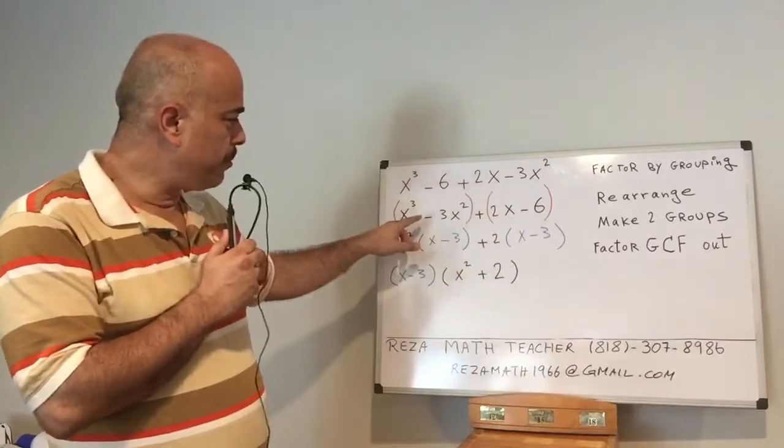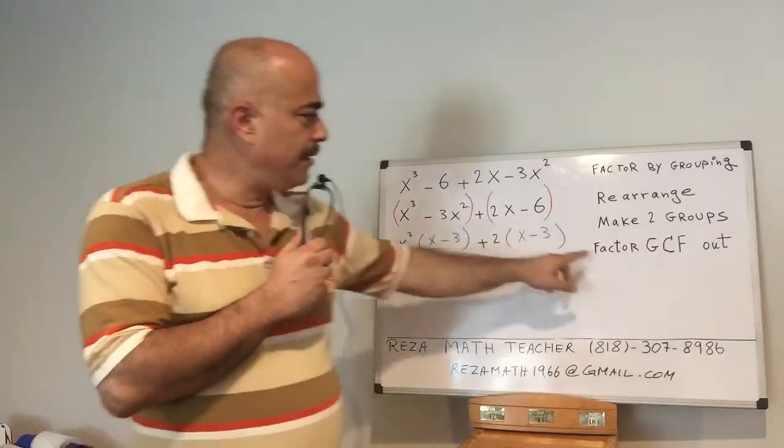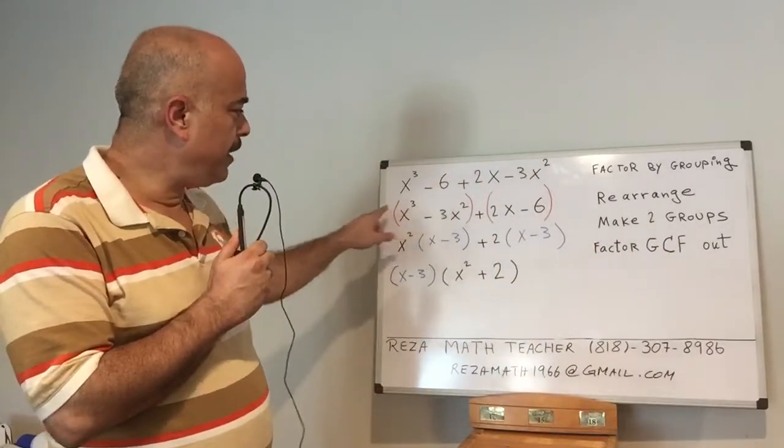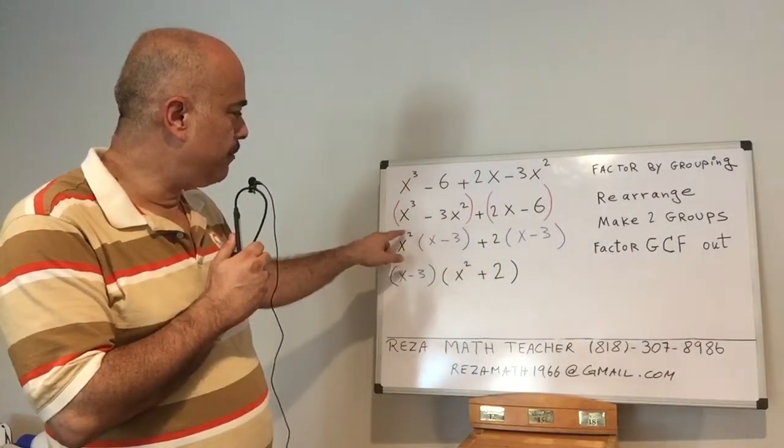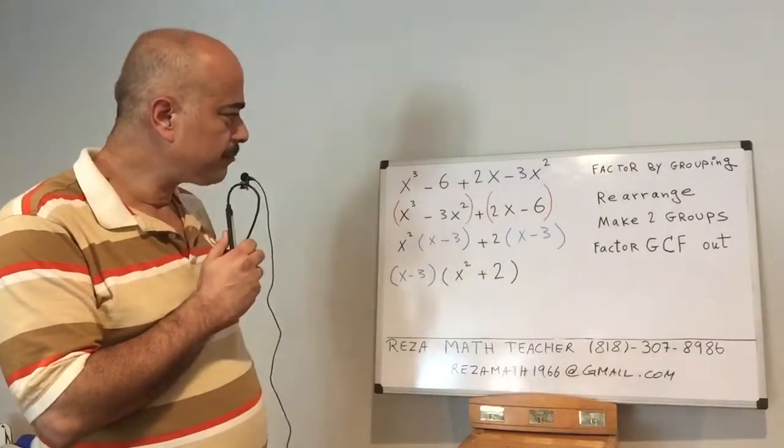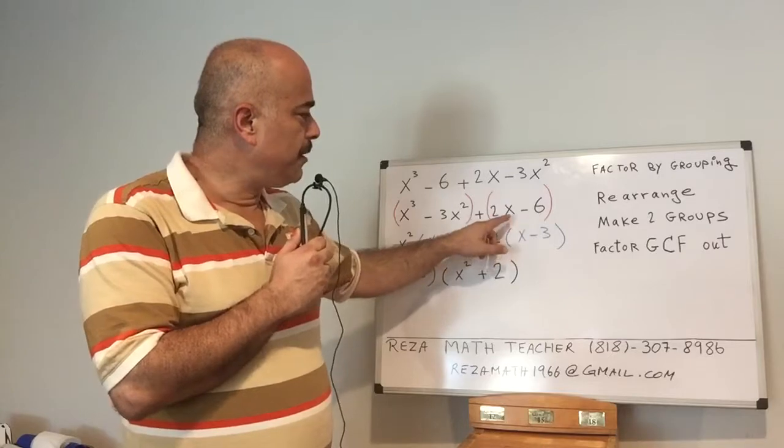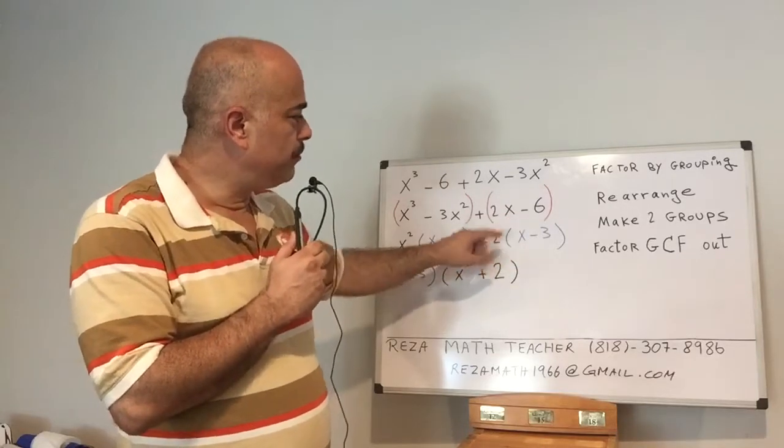Now on each group you have to factor the GCF out. So the GCF of the first group is x². Take it out. For the second part, the common factor is 2. Take it out.